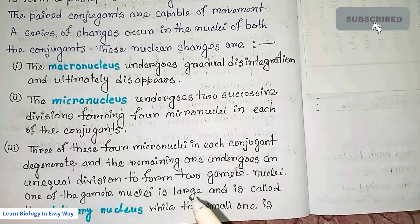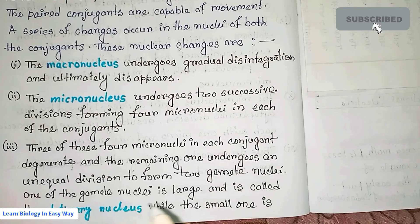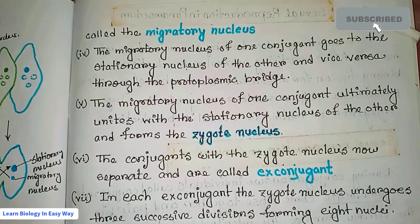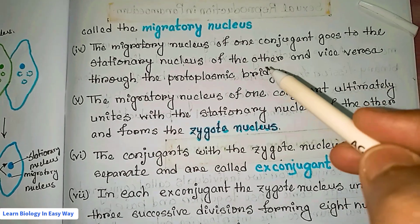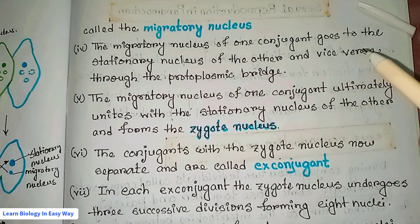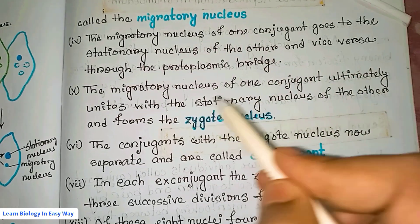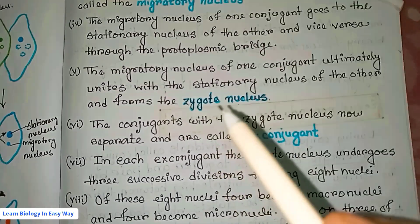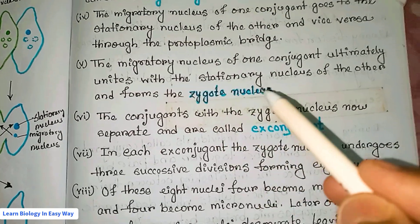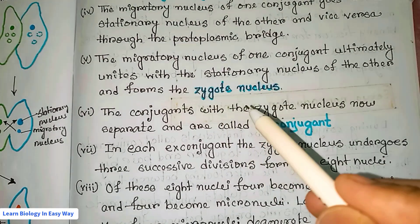One of the gamete nuclei is large and is called the stationary nucleus, while the small one is called the migratory nucleus. The migratory nucleus of one conjugant goes to the stationary nucleus of the other and vice versa through the protoplasmic bridge, and ultimately unites with the stationary nucleus to form the zygote nucleus.